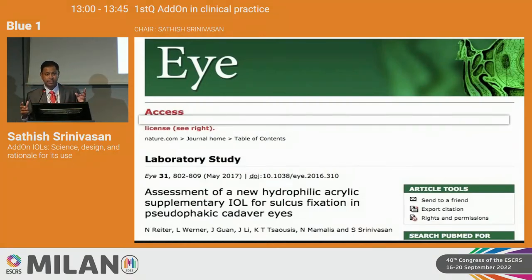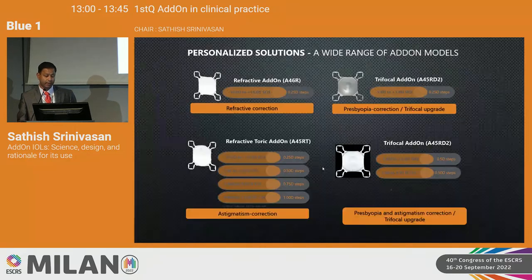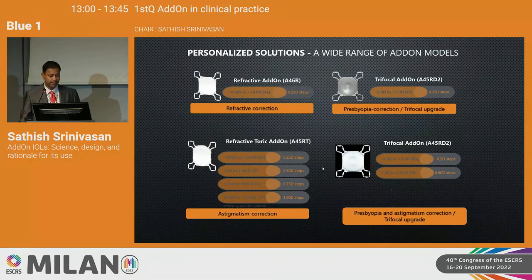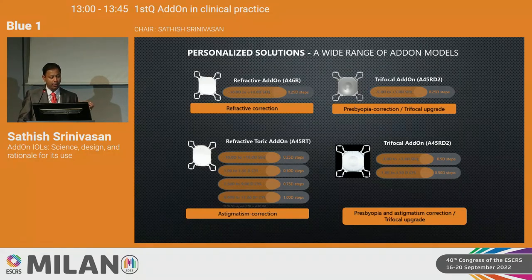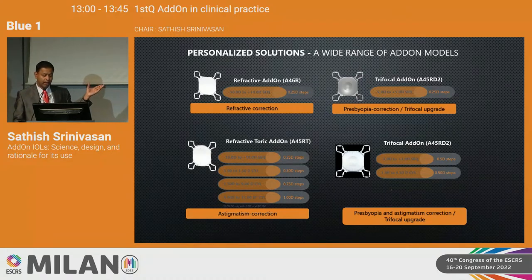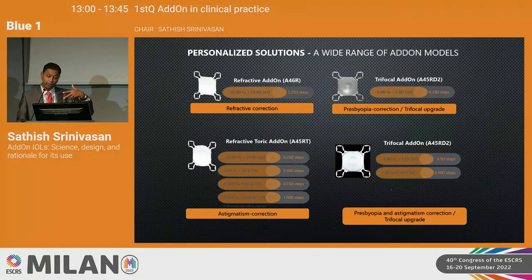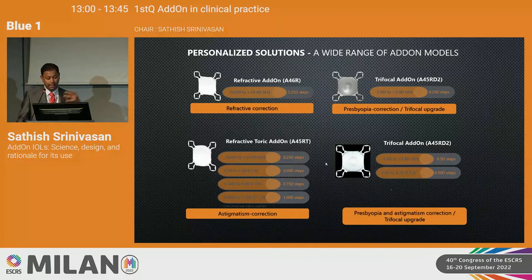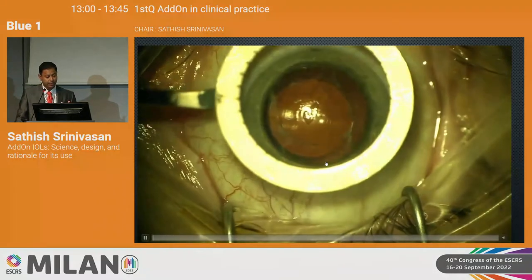The most important clinical consideration is whether the capsular bag IOL complex is stable — that's the template on which these lenses sit. If the patient had complicated cataract surgery with zonular loss, or if the primary IOL is tilted, these are potential contraindications. The add-on lens comes in spherical, toric, trifocal, and trifocal toric configurations, providing great flexibility where the reversibility becomes particularly valuable.